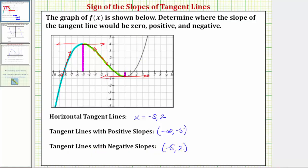Now to the right of this low point, notice how the function increases again because it's going uphill from left to right, which means the slopes of the tangent lines in this interval are going to be positive. If we sketch a tangent line here, we can easily see the slope of this tangent line is positive. So the intervals where the slopes of the tangent lines are positive include, by union, the open interval from positive two to positive infinity.